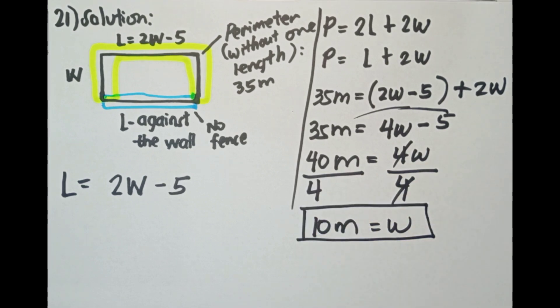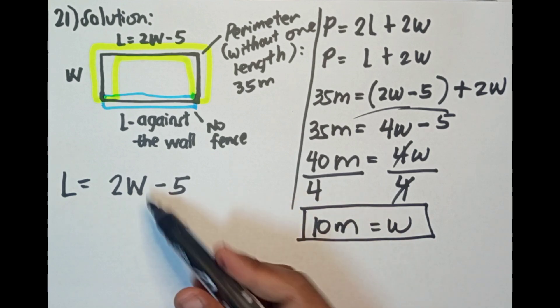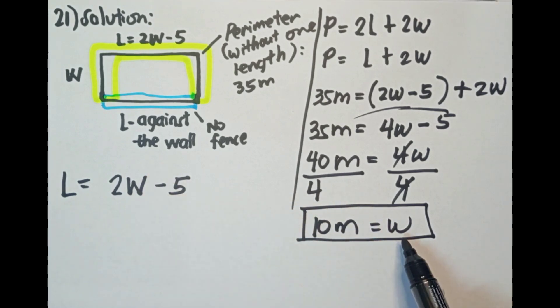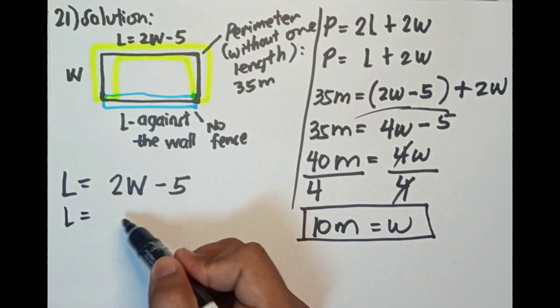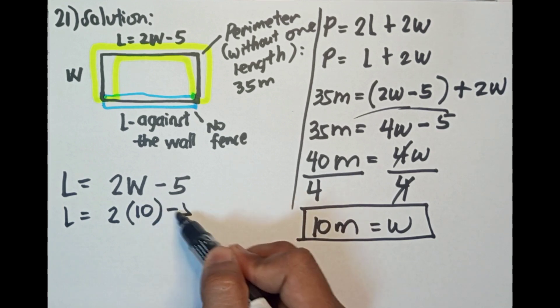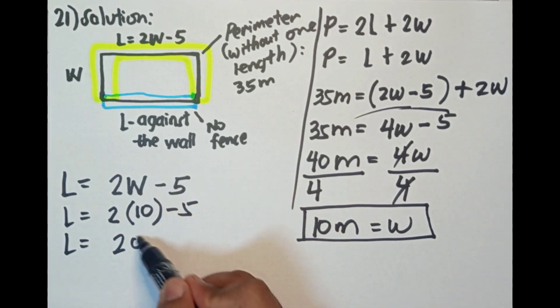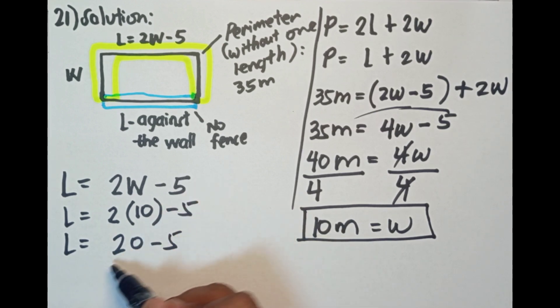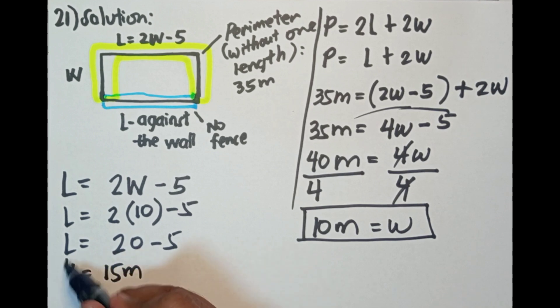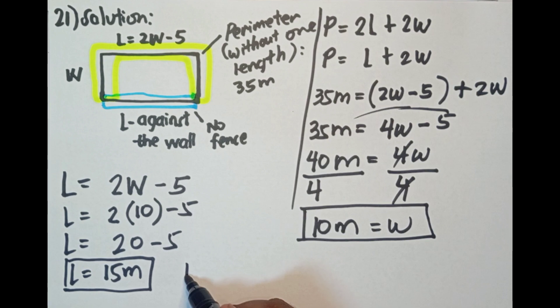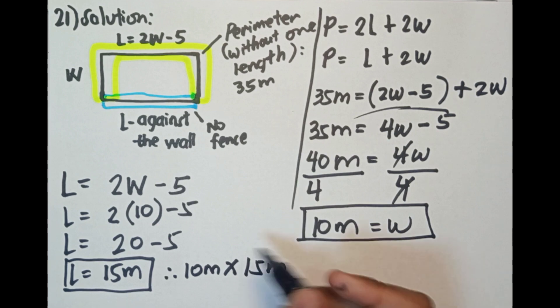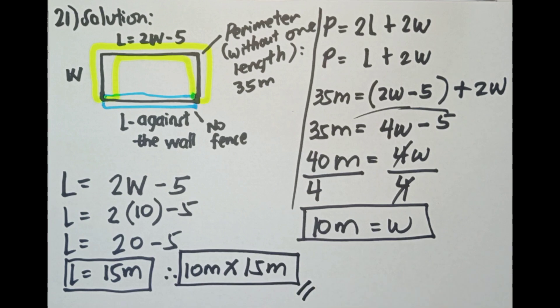Meron na tayong isang side. Hahanapin natin yung length. So using this formula, yung equation natin na nag-derive sa problem. Substitution yung W. So L equals 2 times 10 minus 5. L equals 2 times 10 is 20 minus 5 is 15. So L is 15 meters. Meron na tayong width which is 10 meters. Therefore, 10 meters times 15 meters. Ang tinatanong kasi sa problem, find the dimensions of the lot. So this is the final answer, this is the dimension ng lot.